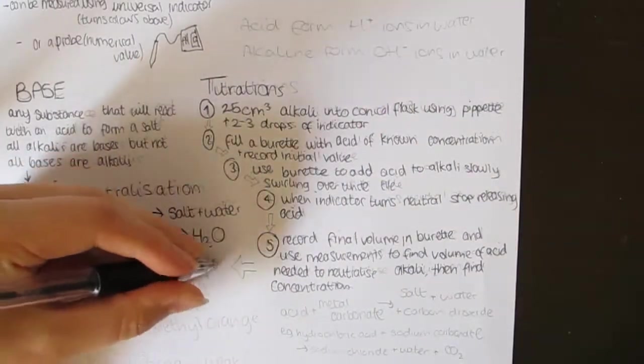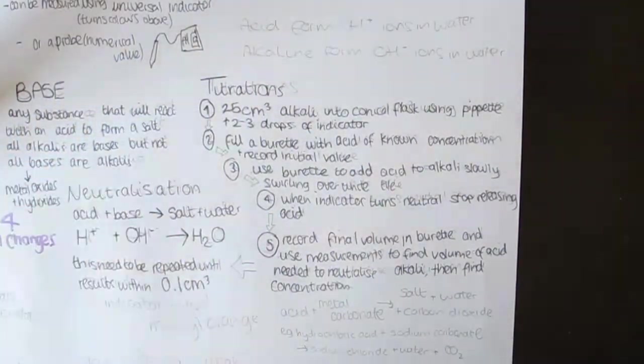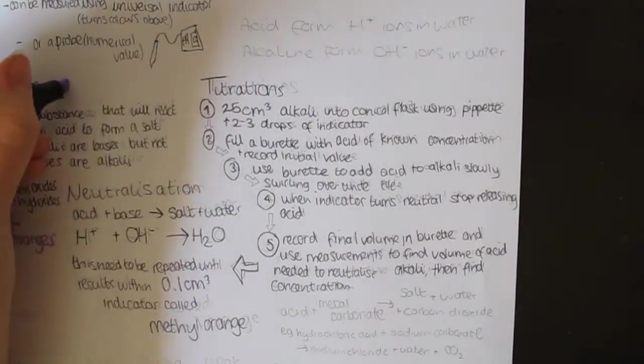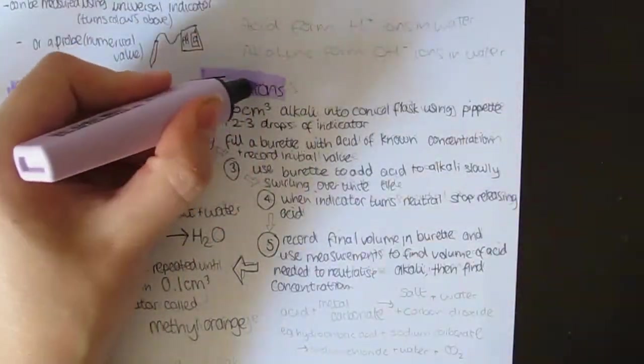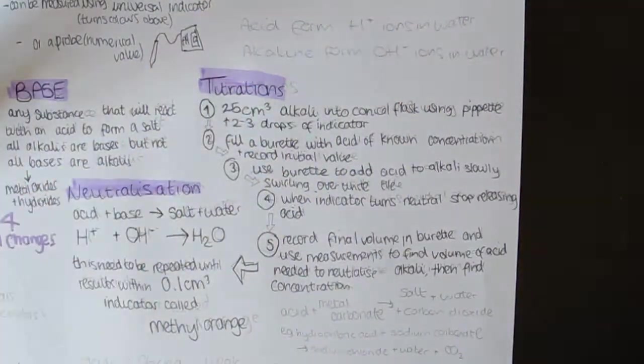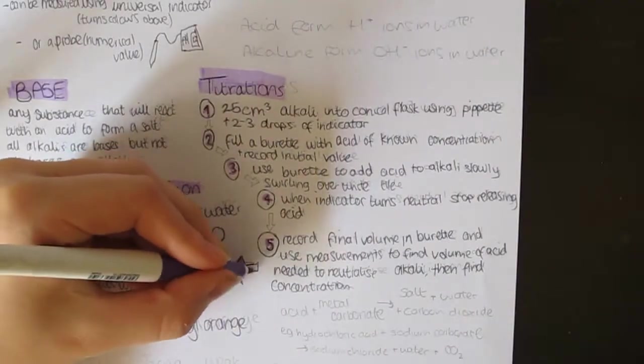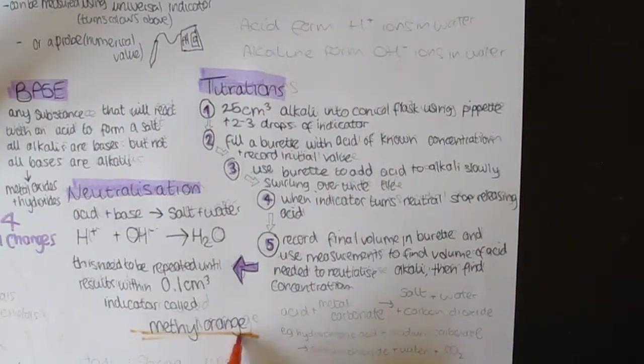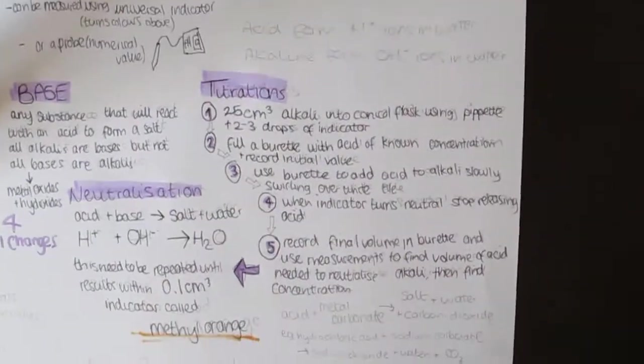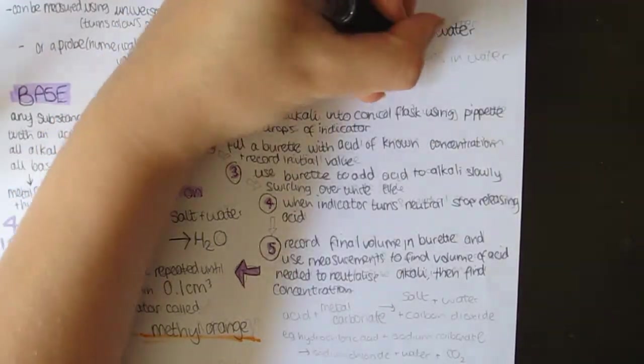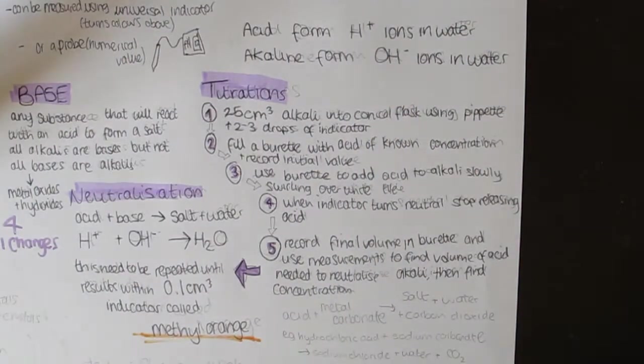Titrations should be repeated to find consistent readings with an error margin of 0.1cm³. These should find the mean without anomalous results to get the final measurement. To make titrations as accurate as possible, an indicator with a sudden color change must be used. This means not universal indicator. Instead, either phenolphthalein, litmus, or methyl orange. I would recommend using methyl orange in the exam because it is easier to remember, spell, and say.